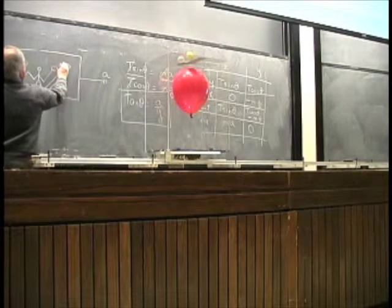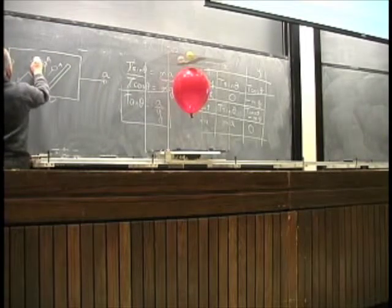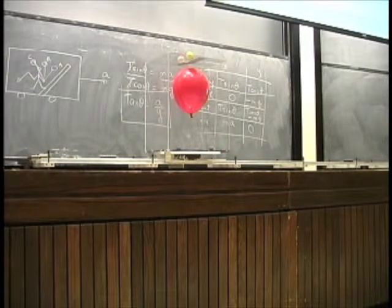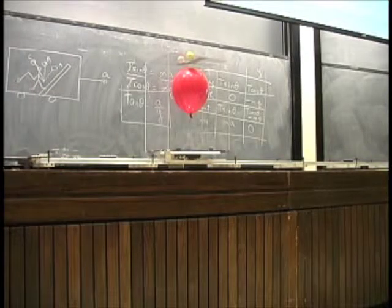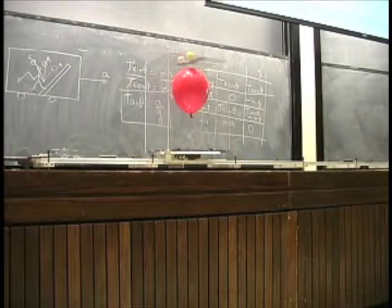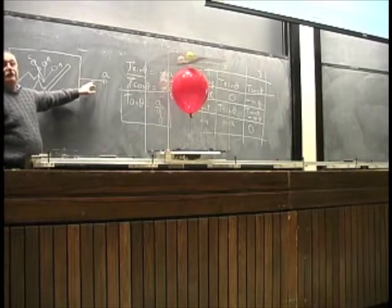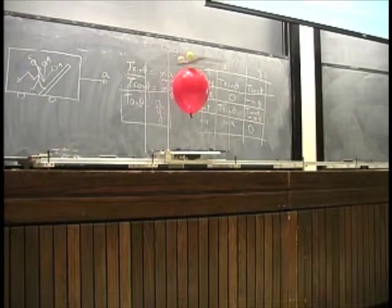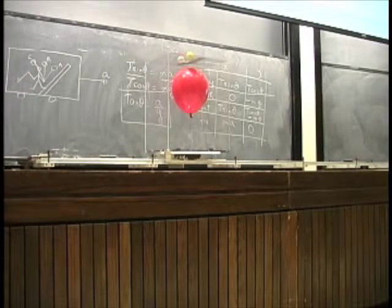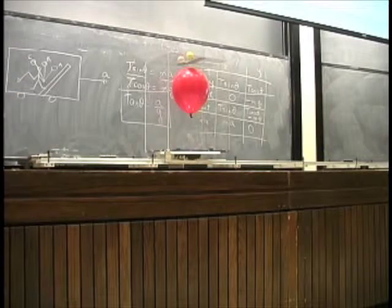So, choice A, choice B, choice C. What do you think? C. Let's vote. How many people say A? Very few. What is that? There is the acceleration. So, how many people say A? How many people say B? Straight up. How many people say C? Everybody.